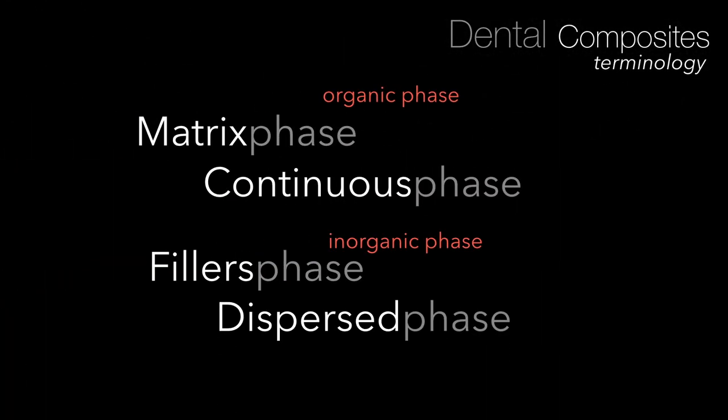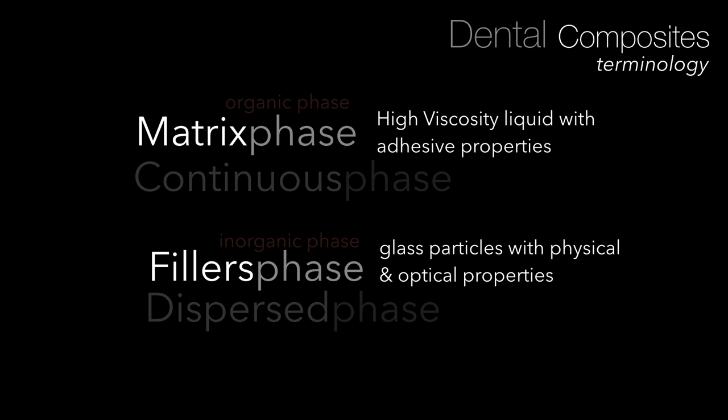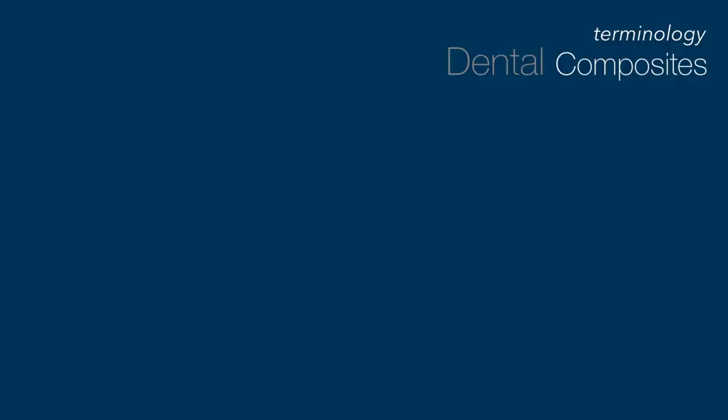The most important properties of the material are based on the type of filler and the type of matrix phase. The matrix phase is called the organic phase and also the continuous phase, because its molecules are in continuous contact with each other, holding the fillers dispersed within it. This matrix phase is a highly viscous liquid with adhesive properties, while the glass particles in the filler phase are mostly responsible for the physical, mechanical, and optical properties.